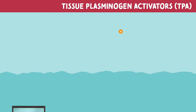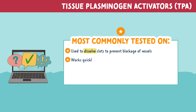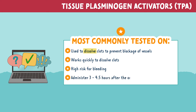Let's review the most commonly tested information for TPAs. TPAs are used to dissolve clots to prevent blockage of vessels. They work quickly to dissolve clots. TPAs cause a high risk for bleeding, and they should be administered three to four and a half hours after the onset of symptoms.